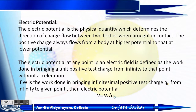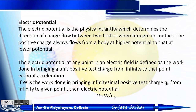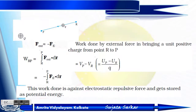We denote work done by W and the unit positive charge is q-naught. So the electric potential V equals W divided by q-naught. This is the formula for electric potential.